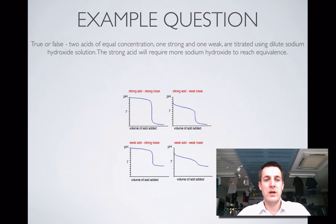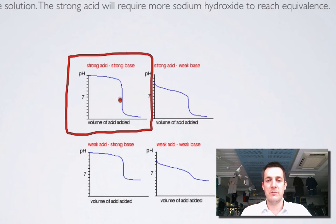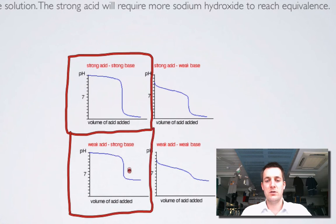First one: true or false, two acids of equal concentration, one strong, one weak, are titrated using dilute sodium hydroxide. We've got a strong base with a weak acid and a strong acid. These curves start in the base region, so I'm adding sodium hydroxide to these acids. Here's our strong acid titration curve, and we've also got our weak acid and strong base. We're starting sort of medium and ending up high, and starting low and ending up high.